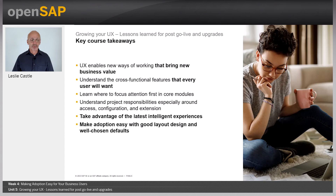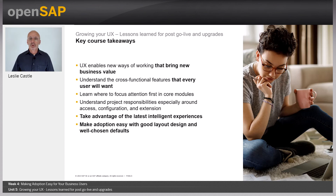The key takeaways for this course are: UX enables new ways of working that bring new business value. There will be cross-cutting features that every user will use, such as Enterprise Search or notifications. You need to learn where to focus attention first in core modules, understand project responsibilities around access, configuration and extensions, and take advantage of the latest intelligent experiences. Make adoption easy with good layout design on your Fiori Launchpad and well-chosen defaults. With that, we come to the end of Unit 5 and this OpenSAP course. I hope you've enjoyed the content, and I'd like to thank my colleagues from the SAP UX team and you, the learners, for your attention and interest. Good luck with the week 4 assignment and the final exam. Thank you and goodbye.